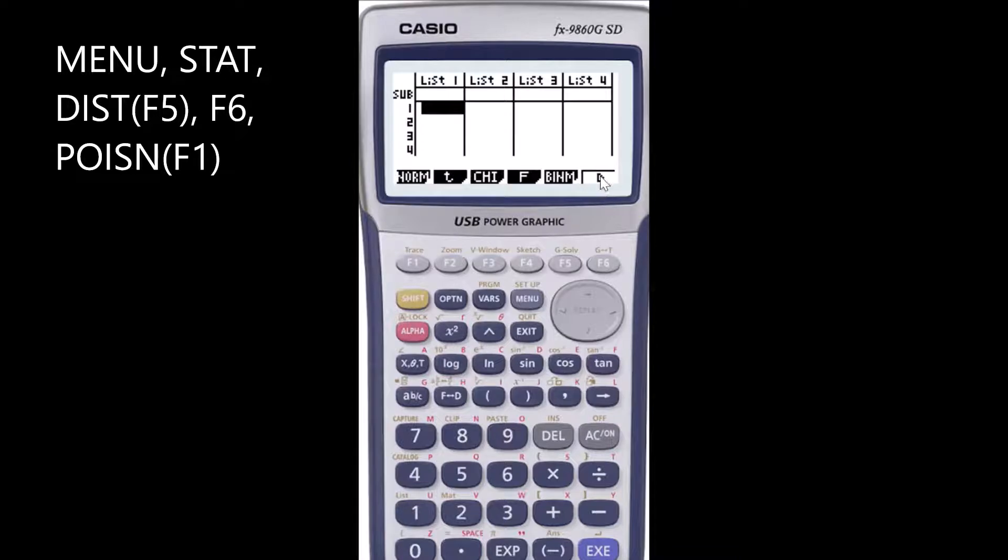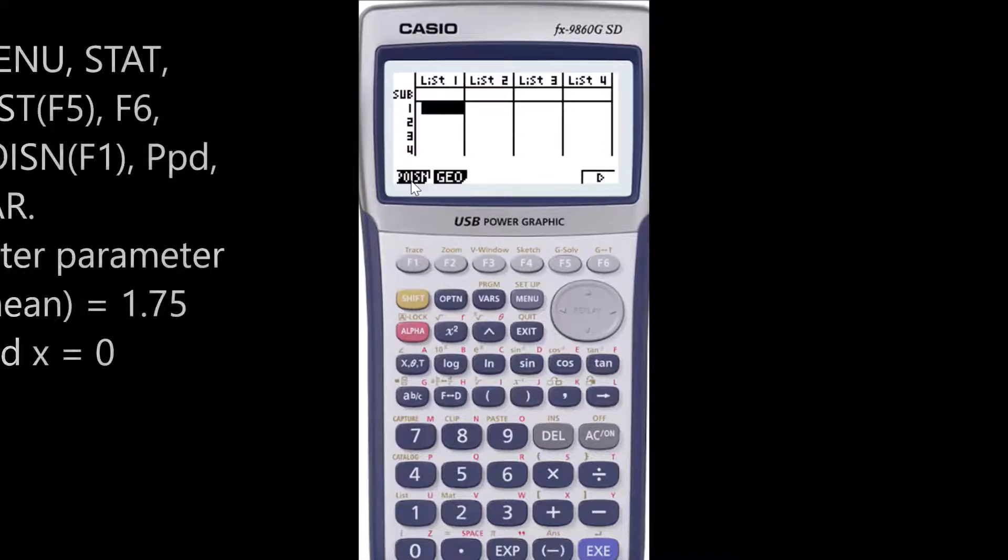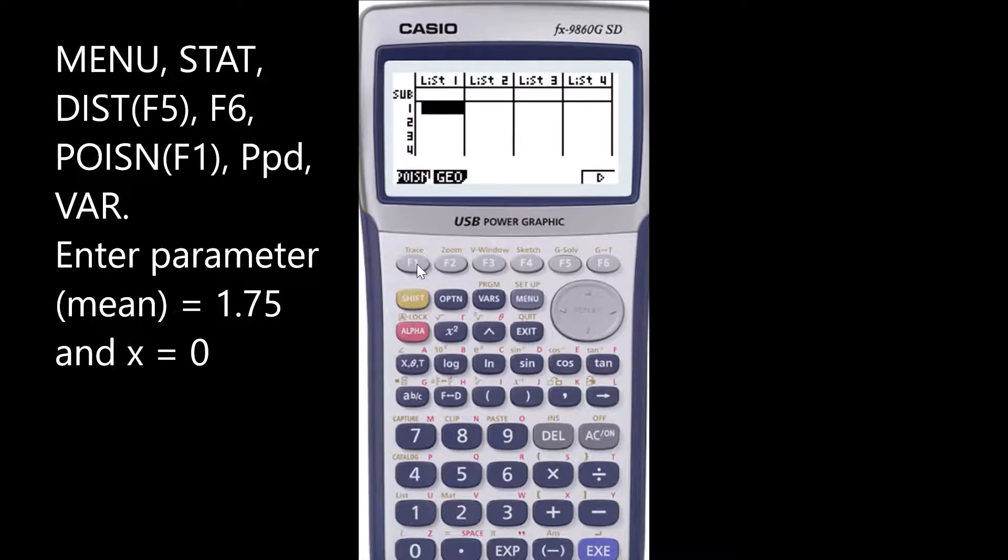F6 will take you to the next page, so hitting F6 gives you a Poisson distribution. We will select Poisson distribution which is F1.